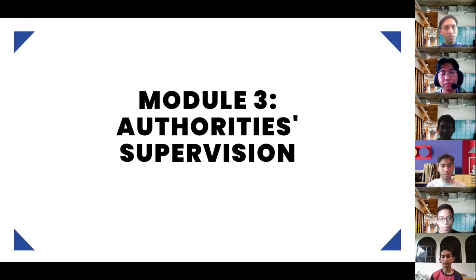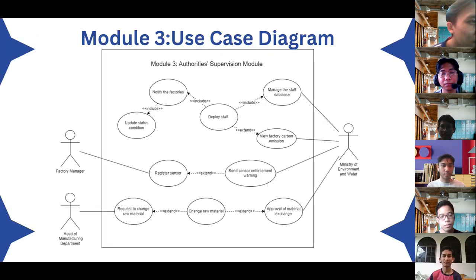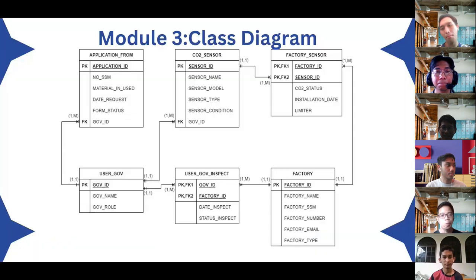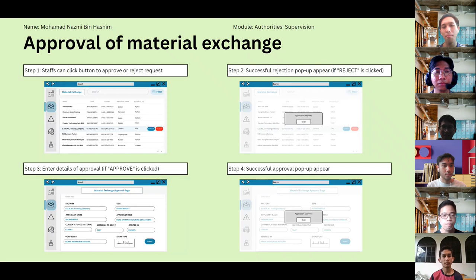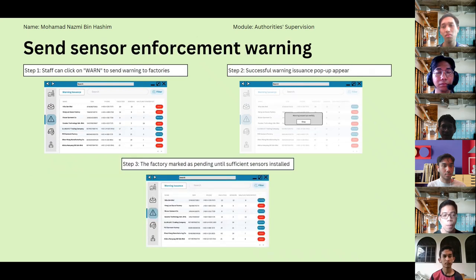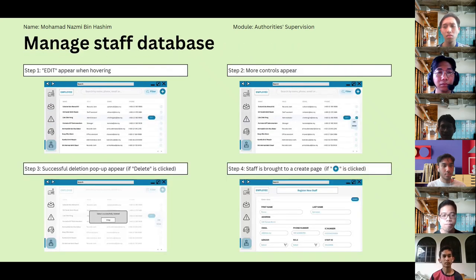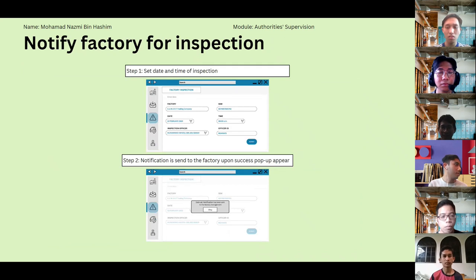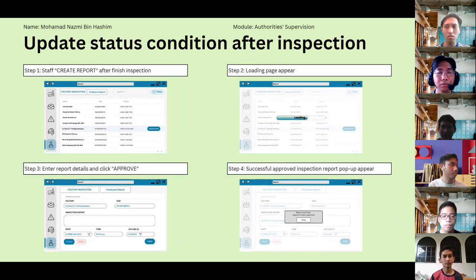My module is authority supervision. The use case diagram has three actors: factory manager, head of manufacturing department, and Ministry of Environment and Water. For the class diagram and features, we have six features: approval of material exchange, send sensor enforcement warning, manage staff database, deploy staff for factory inspection, notify factory for inspection, and update status condition after inspection.